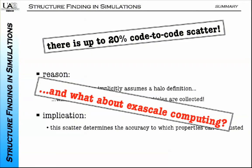But what about exascale computing? Remember the simulation with different resolutions: 256-cube, 512-cube, 1024-cube particles. Only a handful—about two to four finders—were able to analyze the 1024-cube. All the others gave up, some at 256-cube, some at 512-cube. We are very, very happy about exascale computing when it comes to dealing with the petabytes of data that your simulations are going to produce.